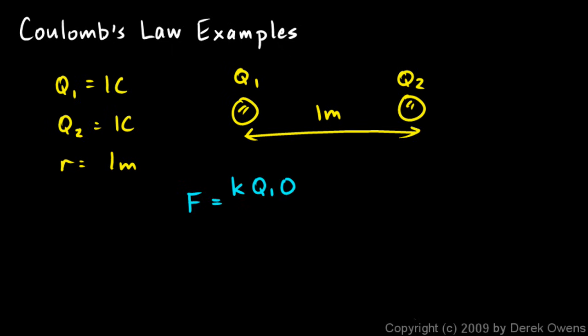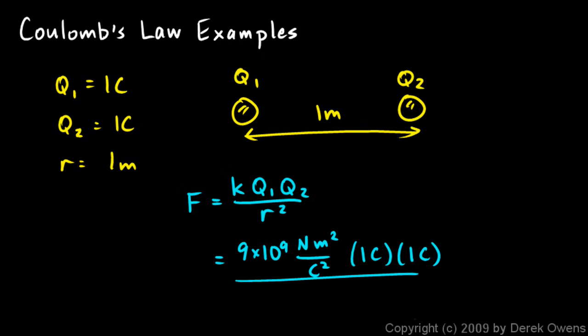So we just put the numbers into this equation. You can actually do this one in your head. K is nine times ten to the ninth Newton meters squared per Coulomb squared, and then all the other numbers are just one. Let's write them in with the units. This is times one Coulomb and times one Coulomb again, Q1 and Q2, divided by R squared, and that's one meter squared.